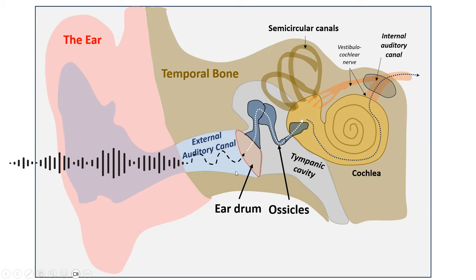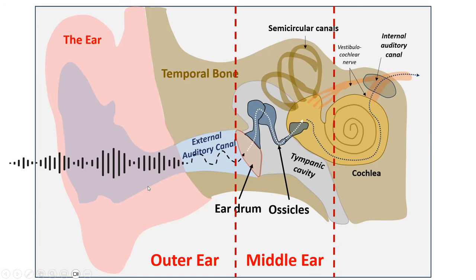Anatomically, we can divide the hearing apparatus into three major parts: the outer ear, the middle ear, and the inner ear, which contains the cochlea and semicircular canals. The rest of this presentation will use this three-part division.